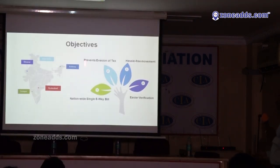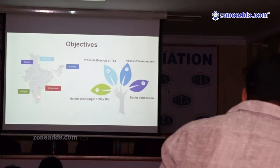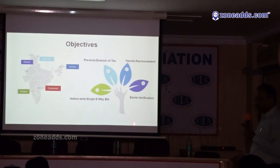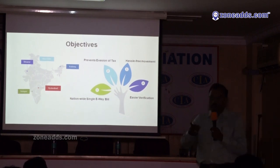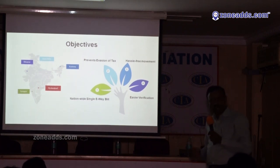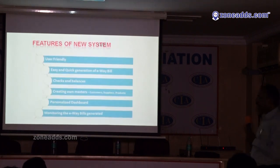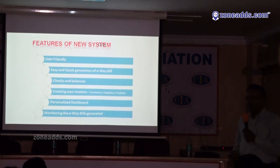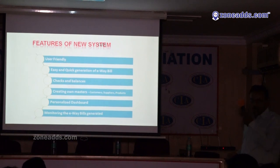What are the objectives of the E-way bill? It prevents evasion of tax. Nationwide, we have only a single E-way bill — earlier we had different E-way bills for each state. Hassle-free movement, no check posts, nothing checked on the road. Vehicles are not stopped for more than 30 minutes. Verification is easy — enter the E-way bill number on mobile, send SMS, or use the website to find out whether it is genuine. You can tally the invoice carried by the transporter. It is very user-friendly.